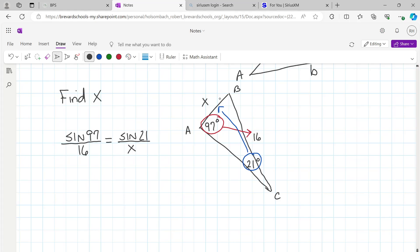So who can tell me how to solve a proportion? Cross-multiply, right? We've been doing that for a while now. So cross-multiply. I like the x on the left, so sine of 97 times x equals sine of 21 times 16. There's our cross-multiply.